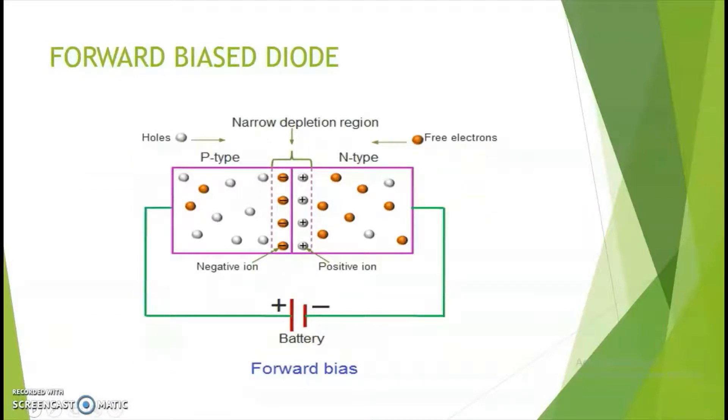If a diode is forward biased, i.e. the positive terminal of the battery is connected to P-type and the negative to the N-type, then we know that like charges repel and unlike charges attract. Due to this, positive and the holes would repel, giving the holes sufficient energy to cross the barrier.